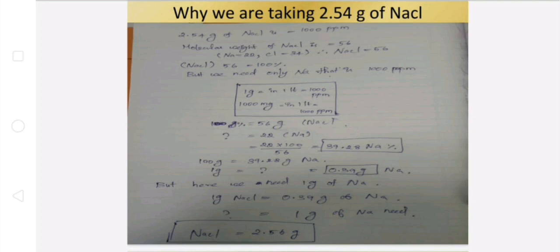So if we add sodium to sodium, again a cross multiplication. Then the answer is correct. That is 2.54 but we have 2.56. Reason is sodium's molecular weight is 22 point something extra.